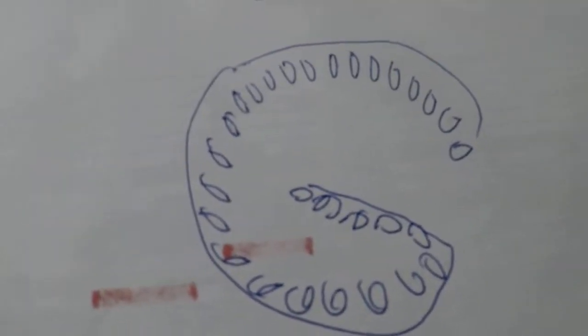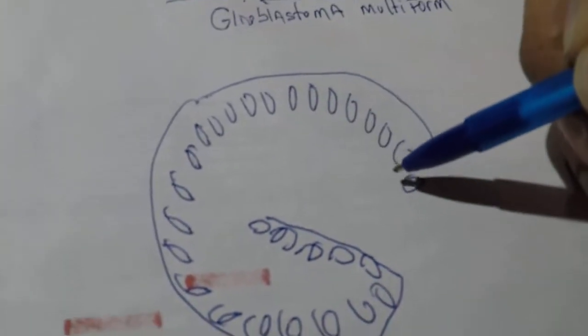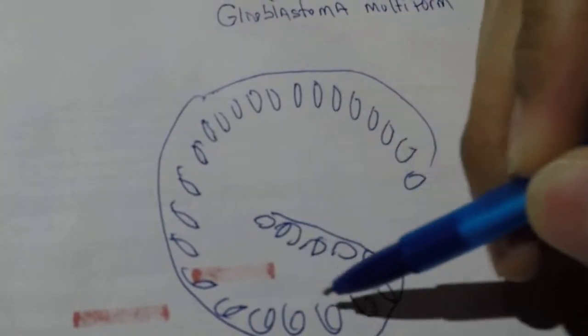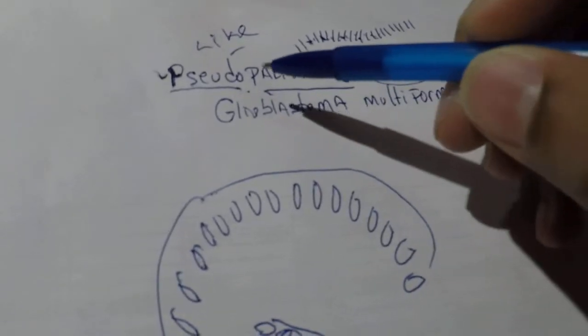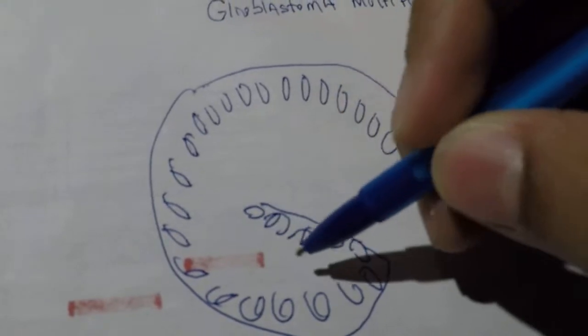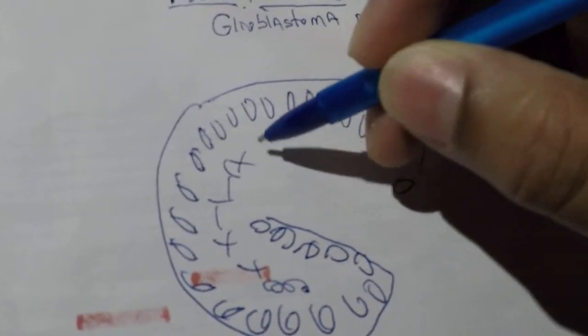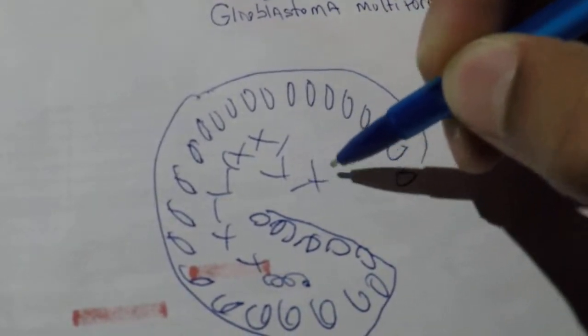inside this palisading or like a lining of tumoral cells, inside you can see necrosis. I'm gonna put it like that, necrosis, everyone is dead. So,